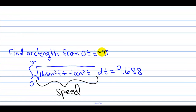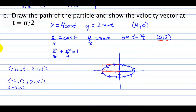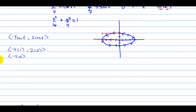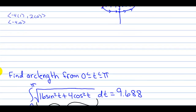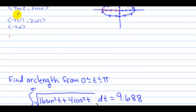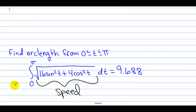Find the arc length from 0 to π. The arc length is the integral of the speed. We take the derivatives — negative 4 sin t and 2 cos t — square the x component, square the y component, take the square root (that's the speed), and integrate from 0 to π. This ends up being 9.688. Arc length is the integral of the speed of the vector.